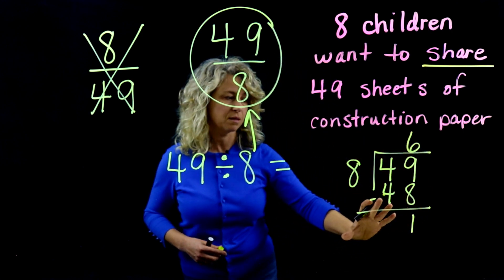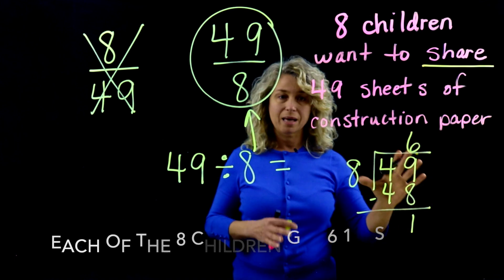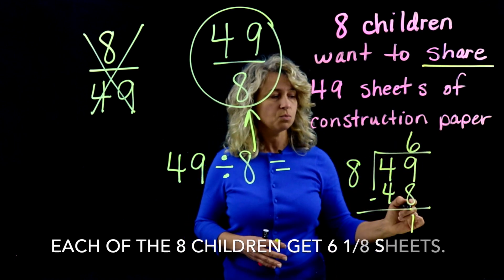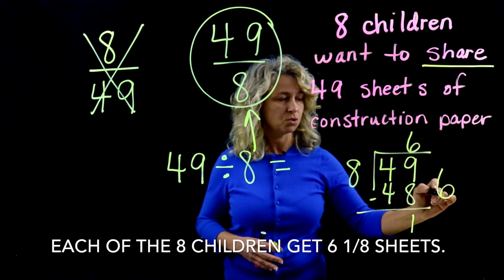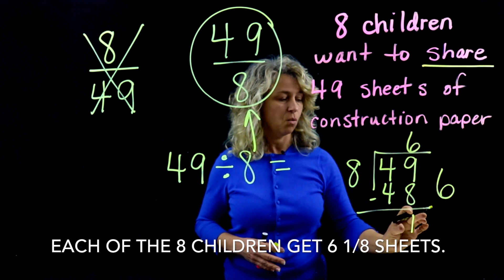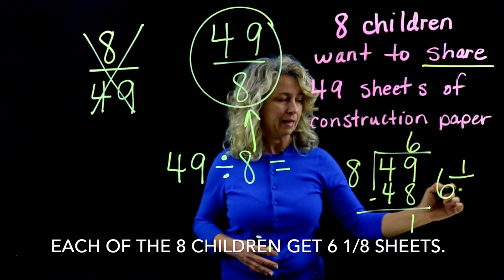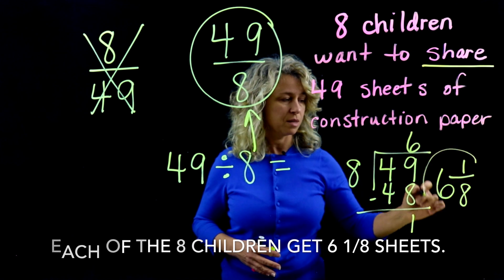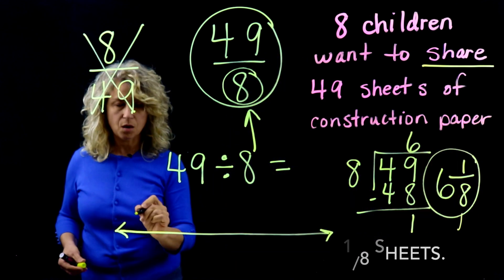Now let's interpret what this means and let's change this back into a mixed number. This will mean 6 is your whole number and 1 becomes the numerator and 8 is your denominator, so 6 and 1/8.